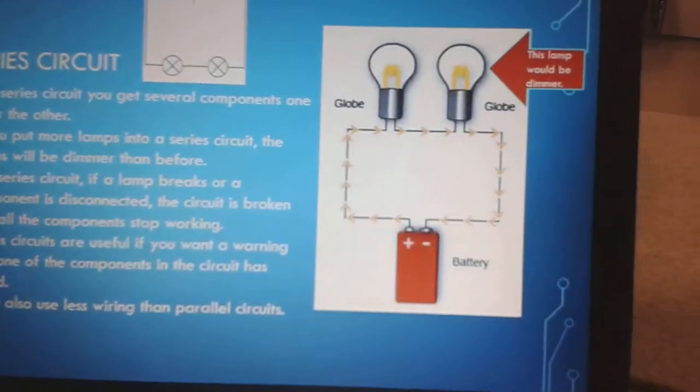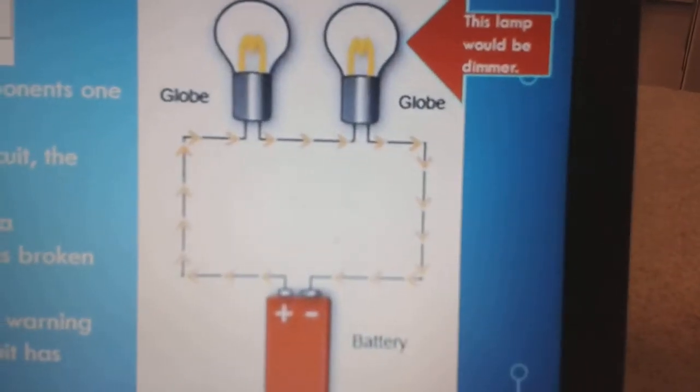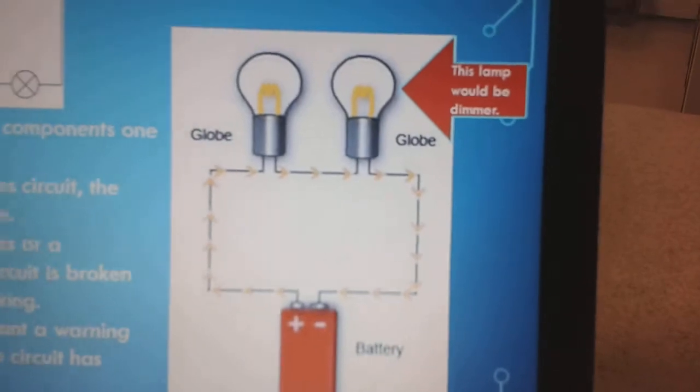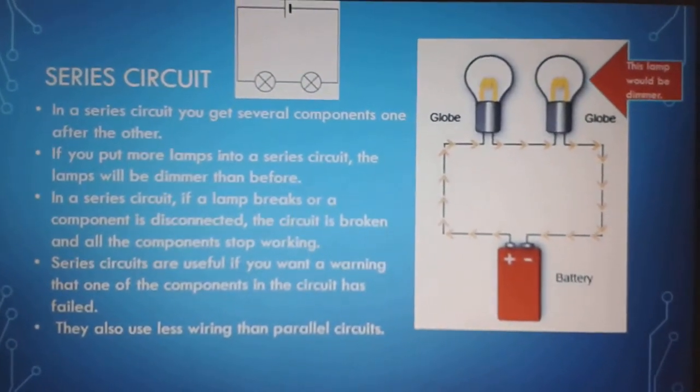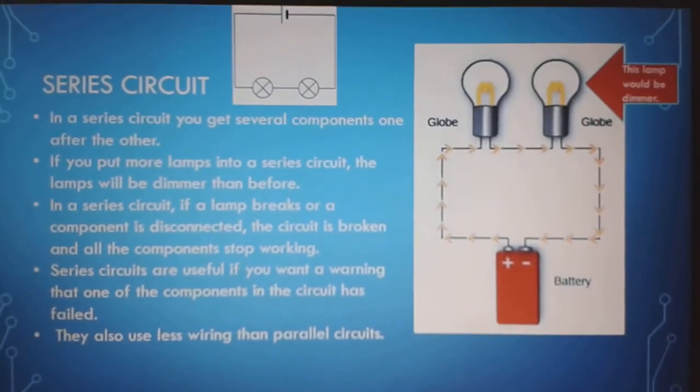If you put more lamps in a series circuit, the lamps will be dimmer than before. Just like that lamp. In a series circuit if a lamp breaks or a component is disconnected, the circuit is broken and all the components stop working.